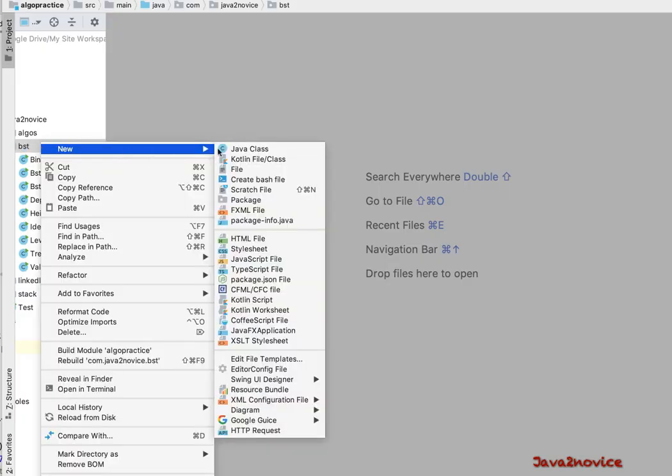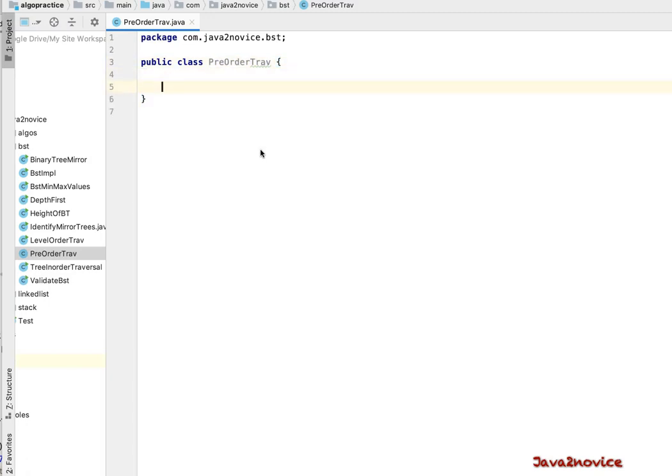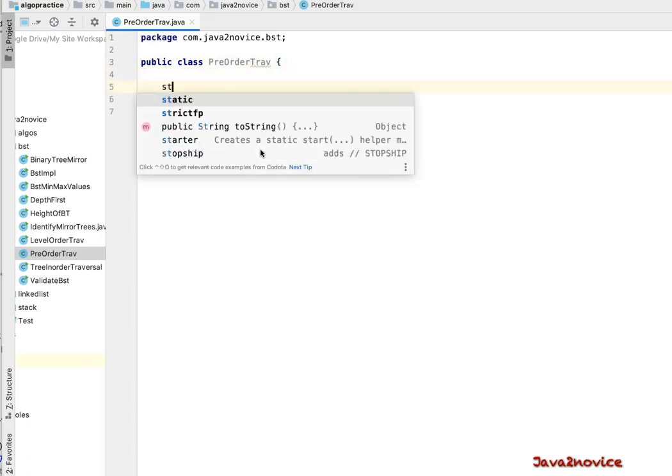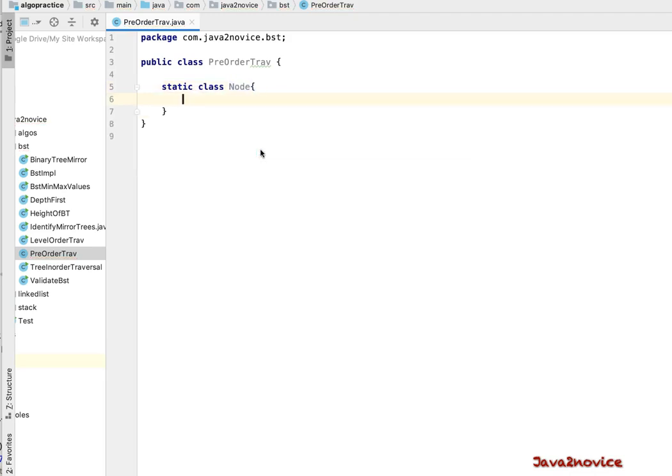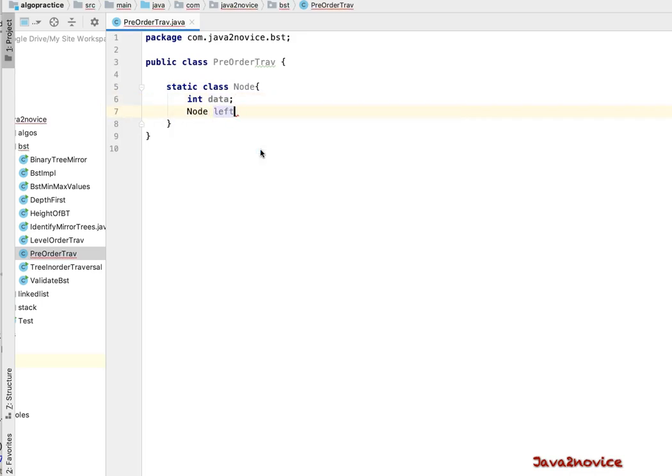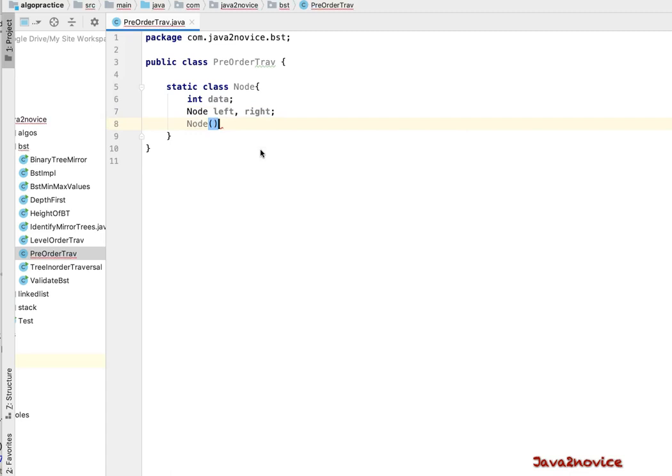Create a new class, PreOrderTraversal. Create a node inner class which is static, has few member variables: data, children references. Then the constructor to create node object. The item will be assigned to data variable.